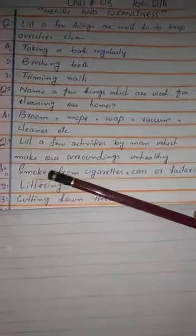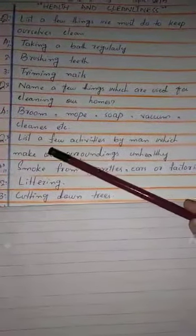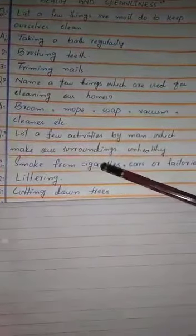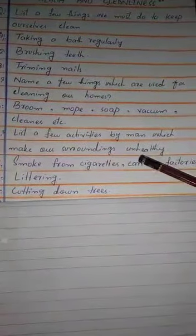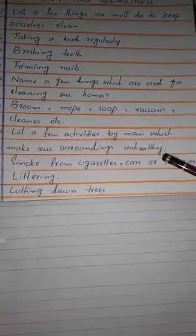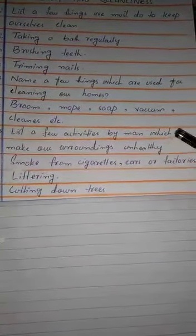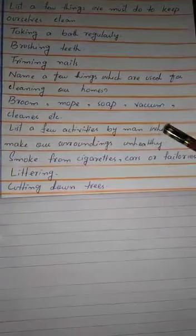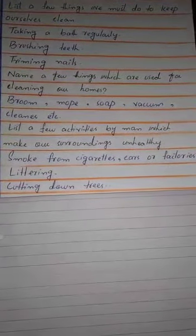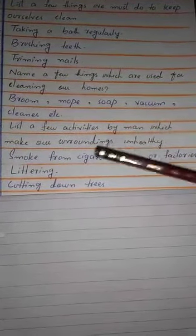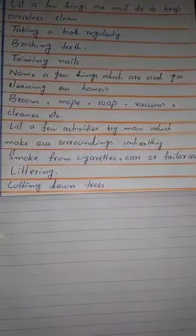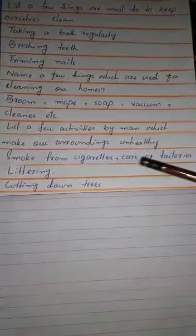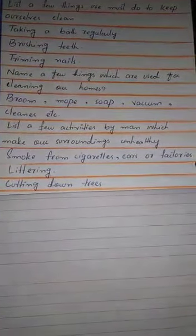Question number 3: List a few activities by humans which make our surroundings unhealthy. What activities make our environment unhealthy? Number 1 is smoke from cigarettes, cars and factories.